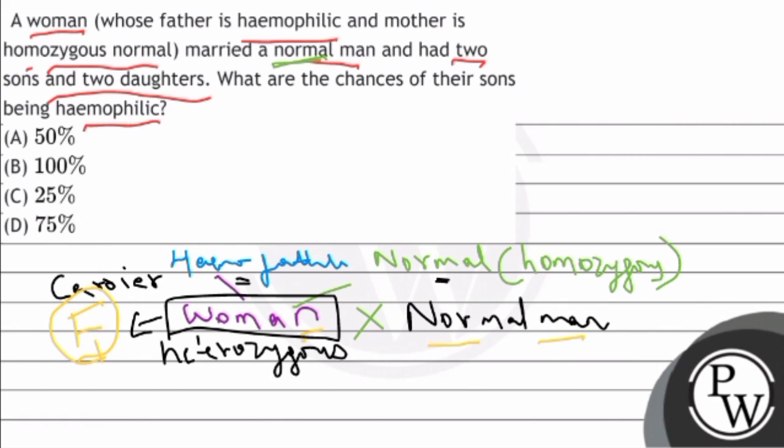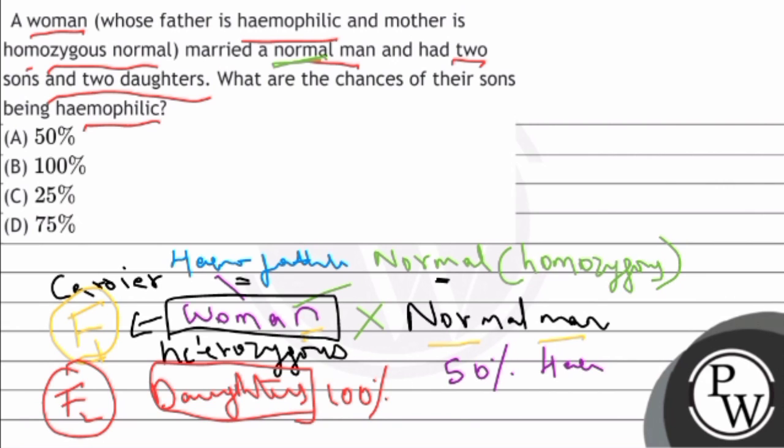Then there are some offspring. So in the F2 generation, daughters are completely... 50% are hemophilic whereas 50% are normal in the F2 generation. So this is the criss-cross pattern of inheritance.